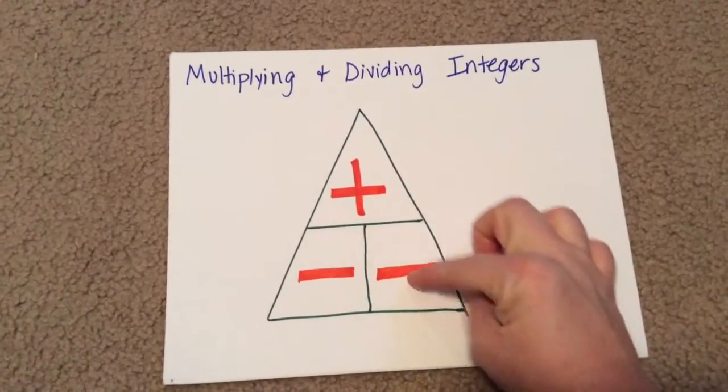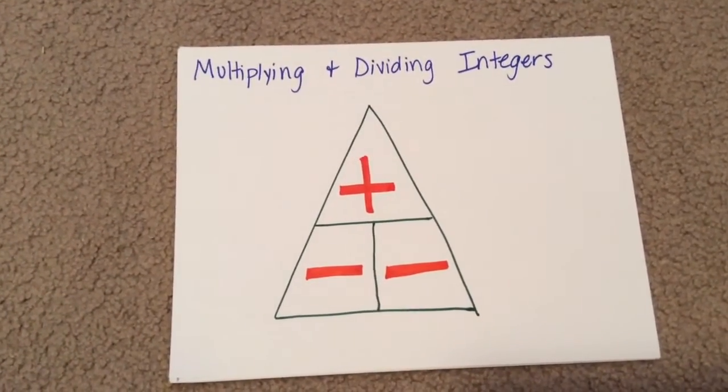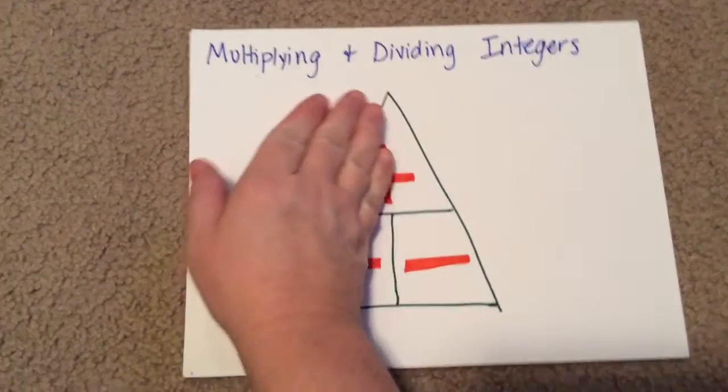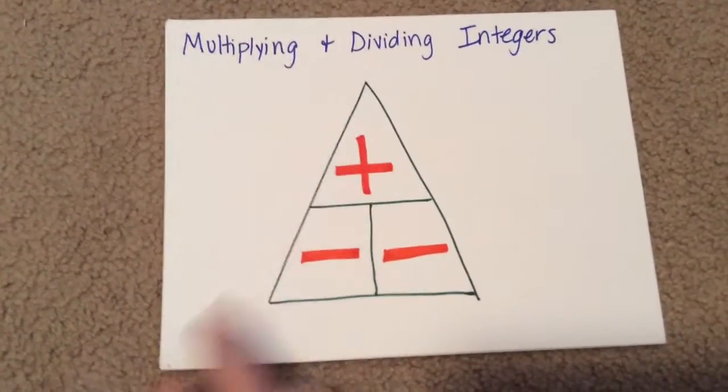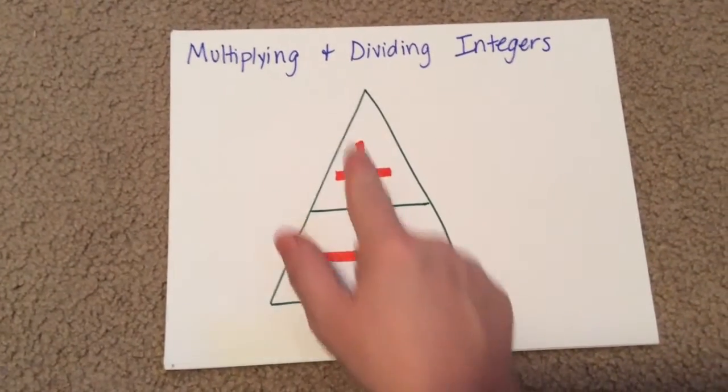If I'm multiplying a positive times a negative, I cover them up, and my answer is negative. Same exact thing with dividing: negative divided by a positive, my answer is negative. Positive divided by negative, my answer is still negative. Negative divided by negative, my answer is positive.